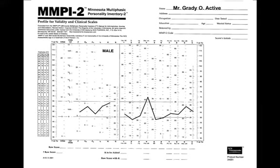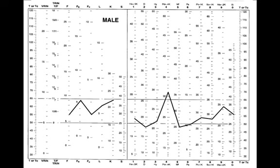Here would be an MMPI profile that you might get. I'm going to zoom in a little bit. When we look at the L, F, and K validity scales, the first thing we recognize is that they are all below T-score 65. So we can probably be pretty safe that this is an individual whose profile is valid. We don't see anything alarming on the validity side that would invalidate the profile.